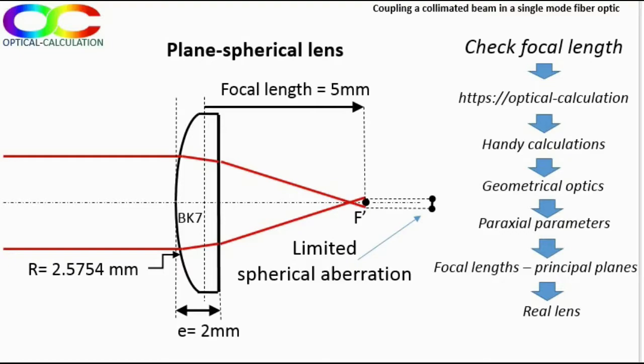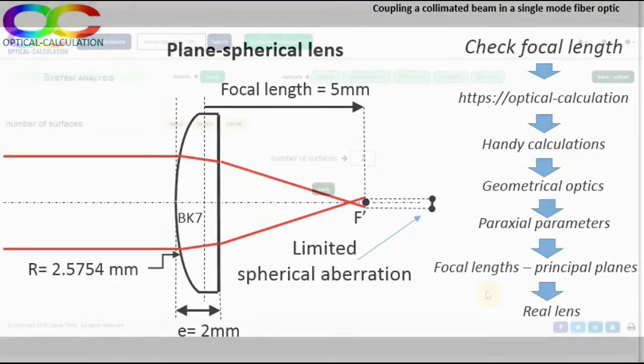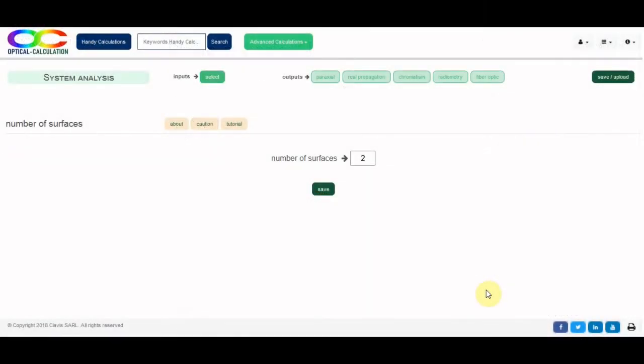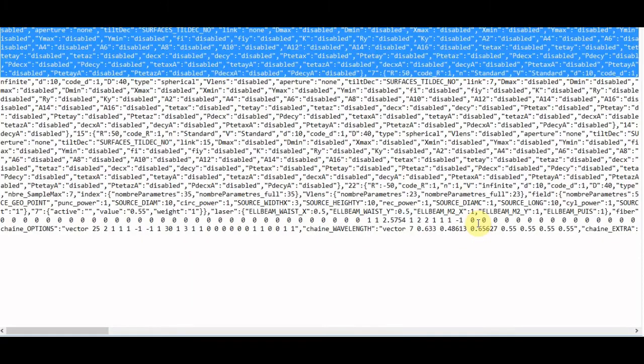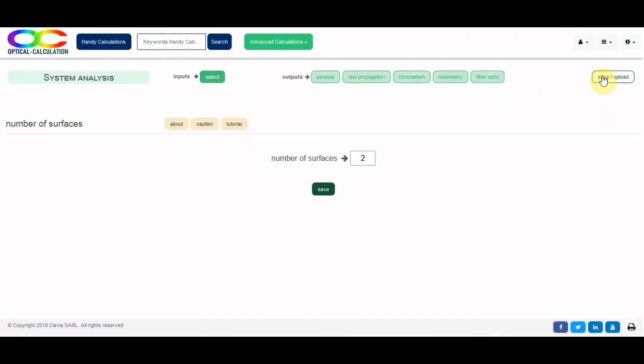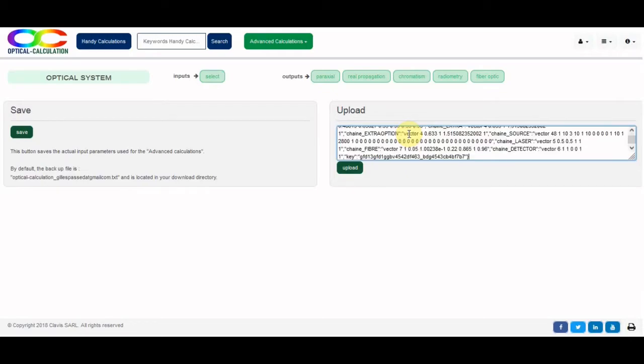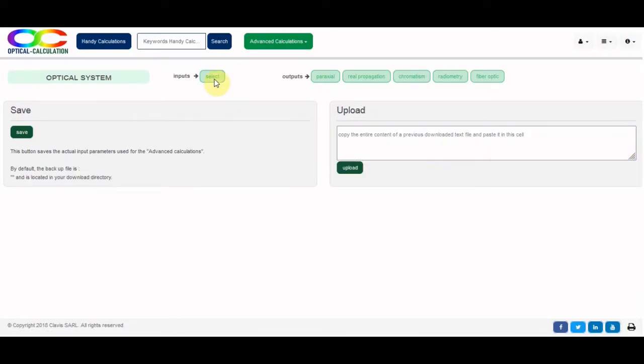Note that for this check, the actual considered wavelength of 633 nm has to be previously entered in the Wavelength page accessible from the General Parameters button. We will consider this presented lens for step 4. Let's go now on the Advanced Calculations tool. We can enter this lens as well as the fiber and laser parameters through the user interface. For saving time, the file including these parameters has already been saved, so I just have to upload it in the dedicated cell.